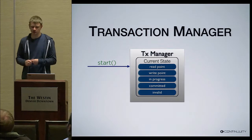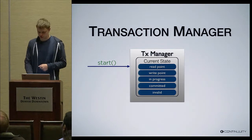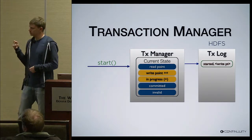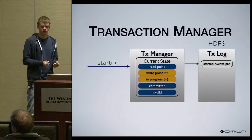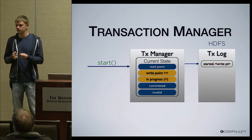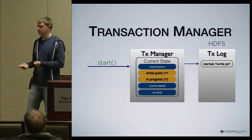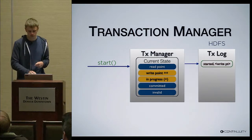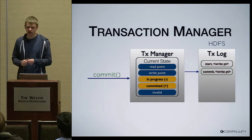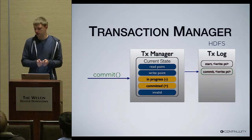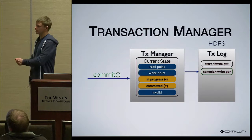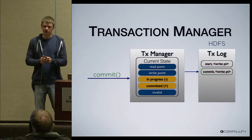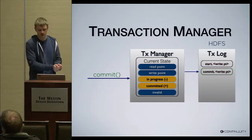Even though the transaction manager keeps state in memory, it is not a single point of failure. It writes a write-ahead log similar to what HBase does on the write path, so a secondary transaction manager can take over if the primary fails, and failover happens quickly. When a transaction starts, we change the internal state — increment write pointer, put the transaction in progress, and write it to the transaction log located in HDFS, so it is reliably stored. The same happens on commit — we update in-memory state and write to HDFS. Using the transaction log, a secondary transaction manager can restore state at any point in time.